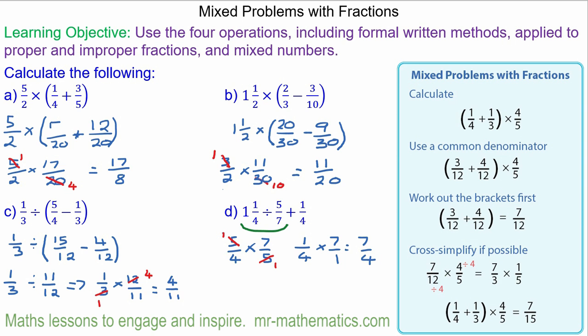Remember, the seven quarters was the division. So finally, put this back into the calculation. Seven quarters plus one quarter gives you eight quarters, which is two.